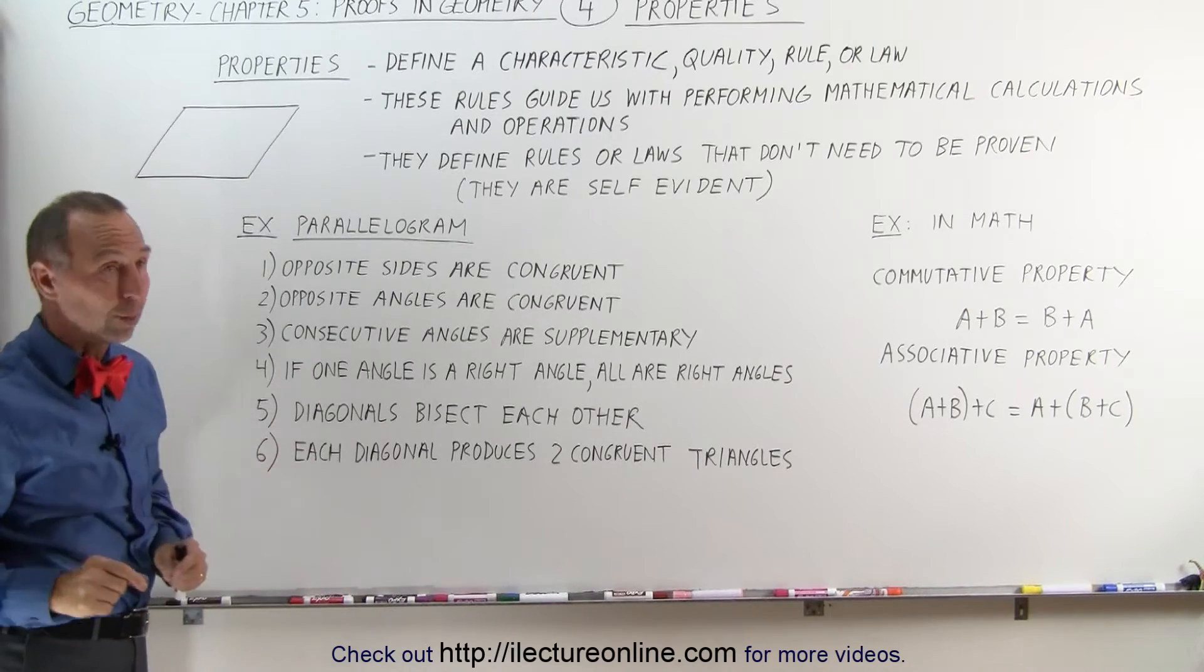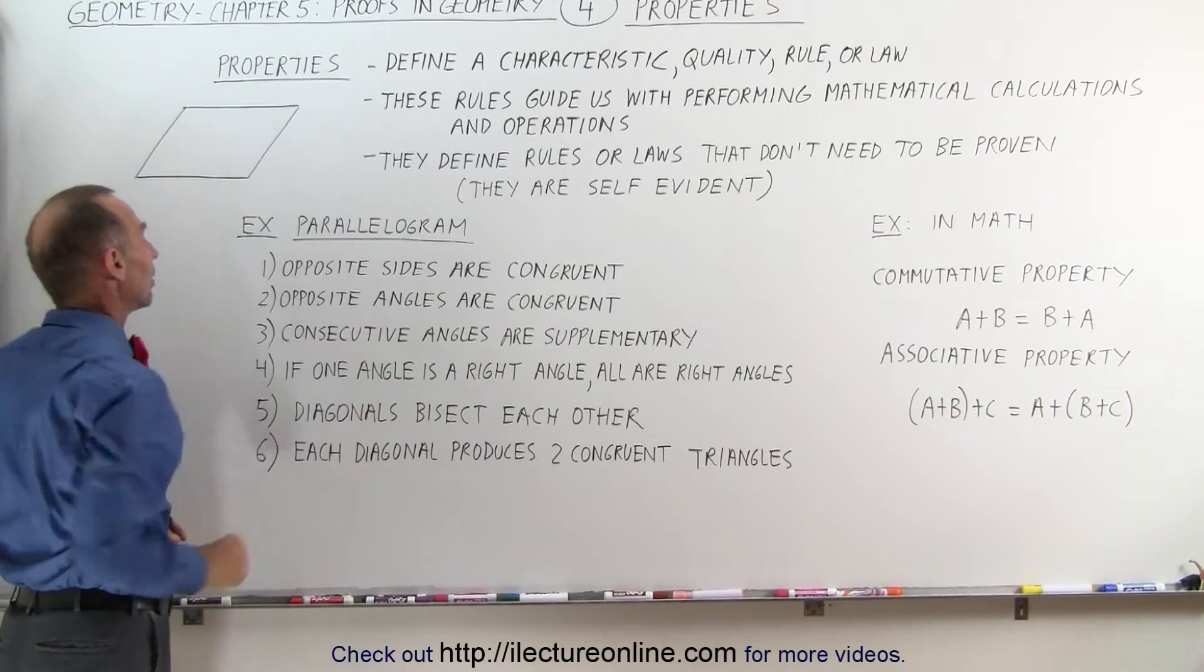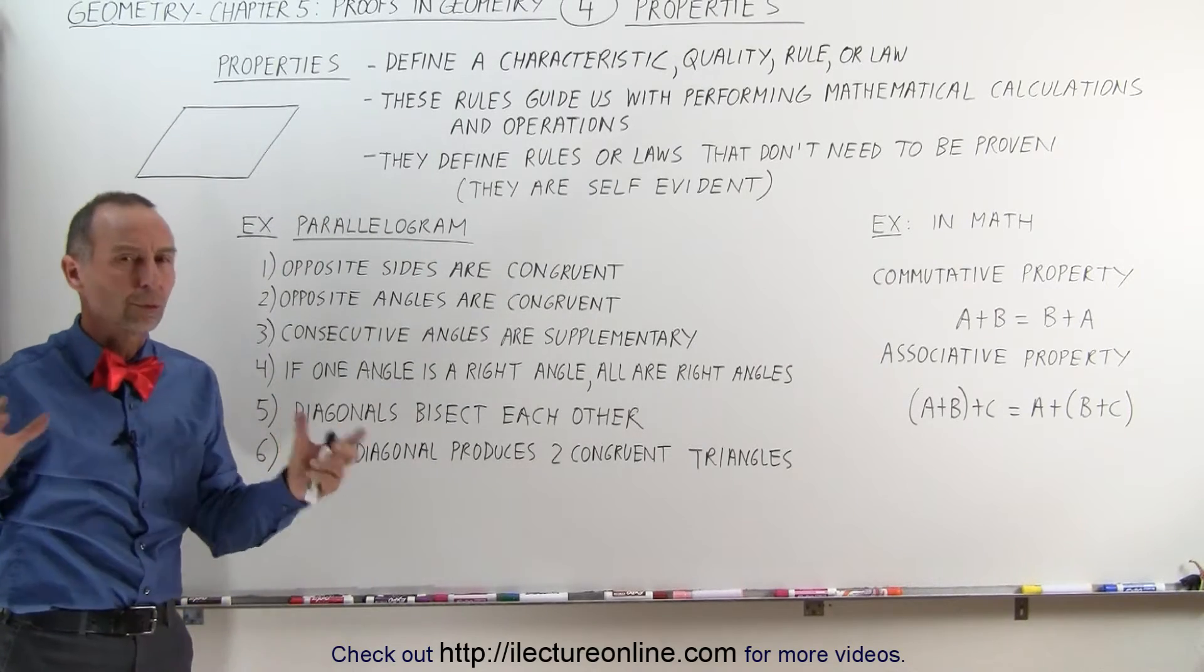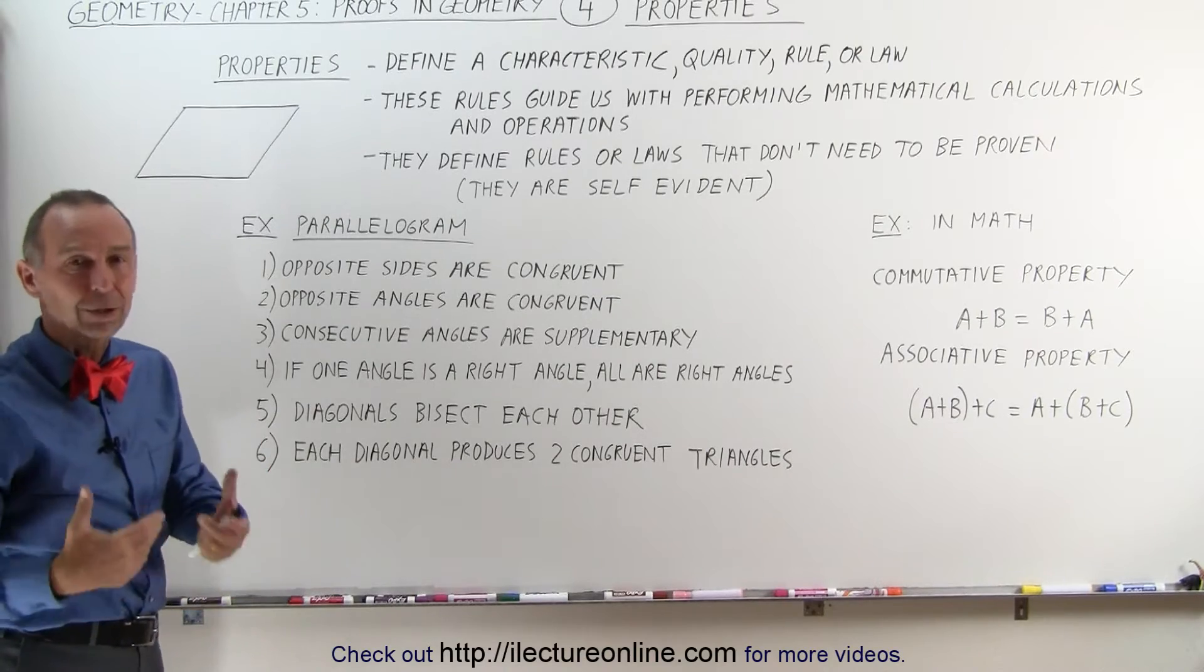Opposite angles are congruent. This angle is congruent to this angle, and this angle is congruent to this angle. The word congruent means they're the same length, magnitude, or angle.